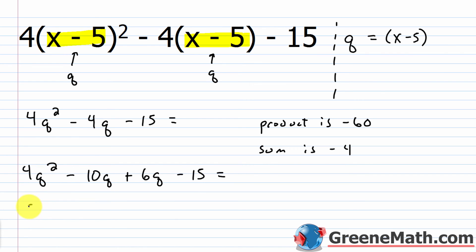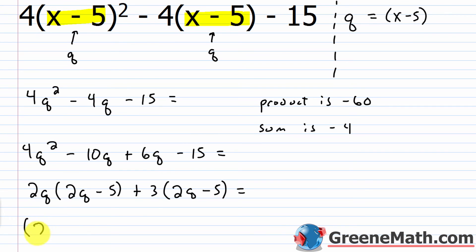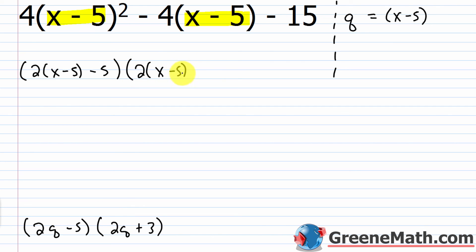I rewrite the middle term: 4q squared minus 10q plus 6q minus 15. Using factoring by grouping, from the first group I pull out 2q, leaving 2q minus 5. From the second group I pull out 3, giving plus 3 times (2q minus 5). Factoring out the common binomial (2q minus 5) gives (2q minus 5) times (2q plus 3). But I'm not done — q represents (x minus 5), so I substitute back.